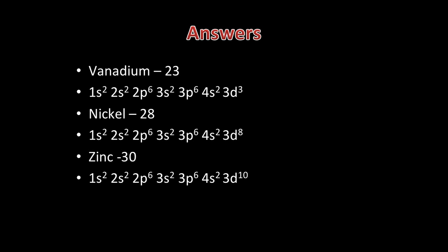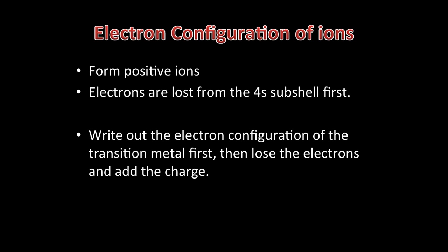We are now going to move on to writing the electron configuration of ions of transition metals. As with all transition metals, they form positive ions because they lose electrons. However, unlike other metals, many transition metals can form ions with different charges because the number of electrons they lose can vary. When writing the electron configuration of transition metal ions, you need to remember that electrons are lost from the 4S subshell first before the 3D subshell. The easiest way is to write out the electron configuration of the element and then take away the required number of electrons.